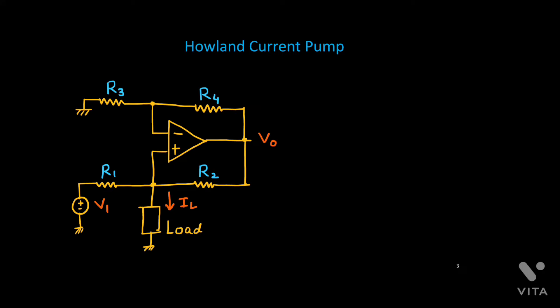In this Howland current pump circuit shown here, the main objective is to provide a constant current IL to any load from a DC source V1. That means we can generate one current source which will supply a constant current to any load. This is a voltage to current source converter.